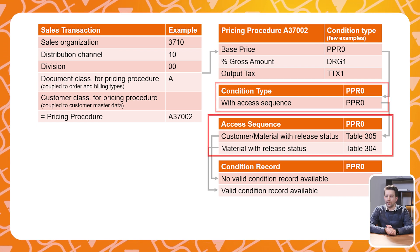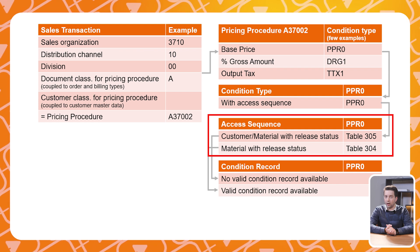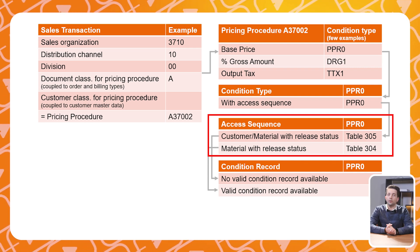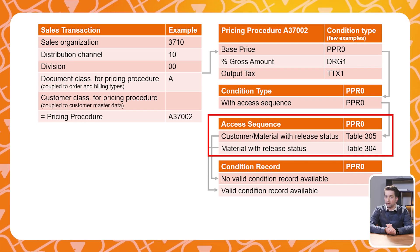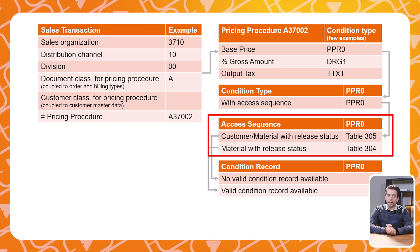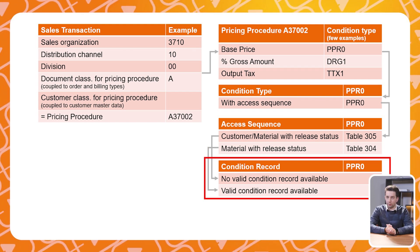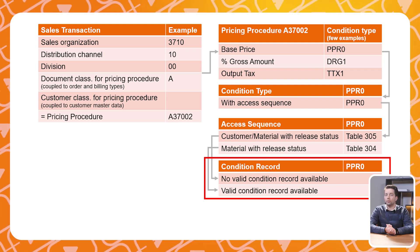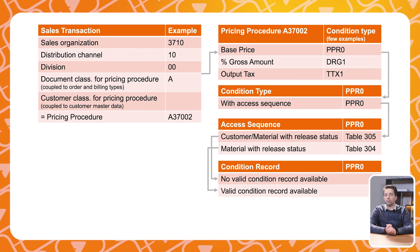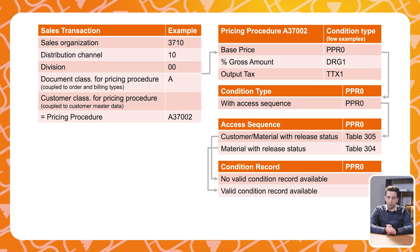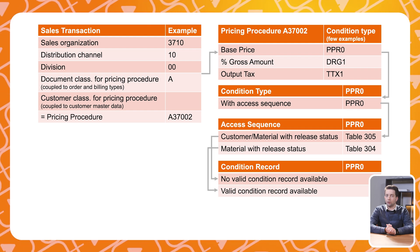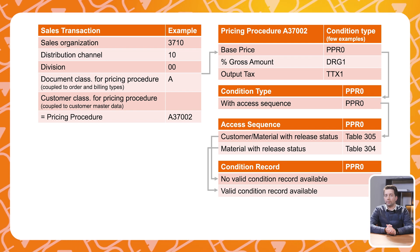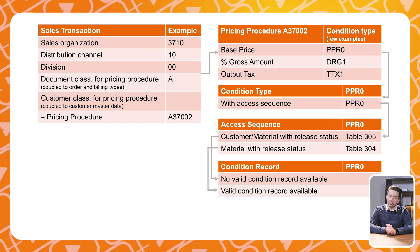Each condition type can have an access sequence. An access sequence is a hierarchical search strategy to find valid condition records during pricing. For example, you can maintain prices for the customer-material combination or for a material only. A condition record stores data for specific pricing conditions such as customer-specific prices or material-specific discounts — this can be the value for the base price, for example. To summarize: you create a sales document and the system looks for valid condition records via the access sequence search strategy, searching for a specific condition type present in the pricing procedure. The final price is then calculated based on the settings in the pricing procedure.